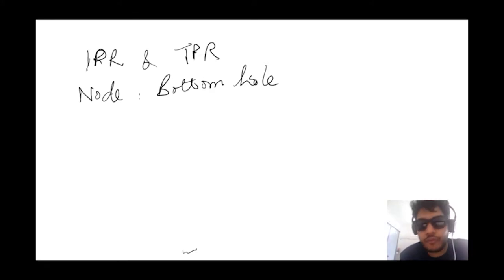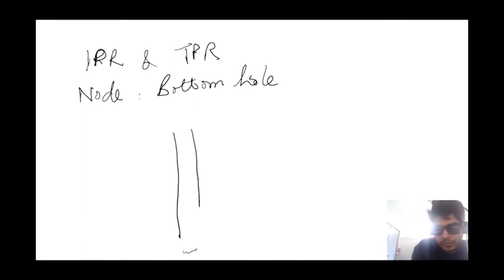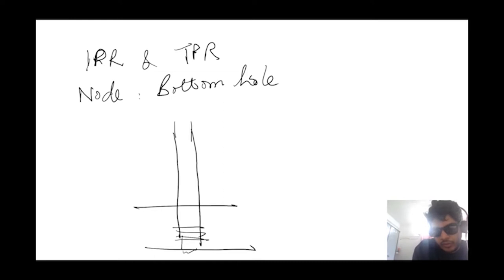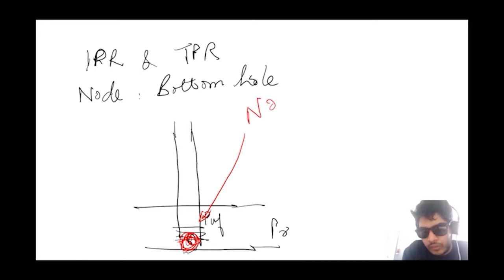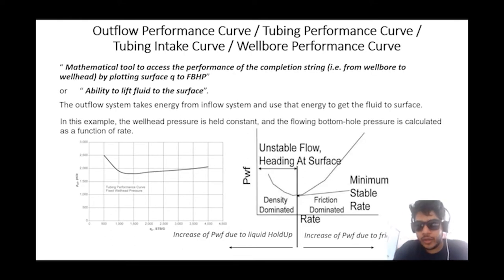Now that's it for the discussion of IPR. The next topic we will be discussing is TPR, that is Tubing Performance Relationship. Whenever we are talking about IPR and TPR, we have to note that the node — the point where we are evaluating — is at the bottom hole. This point is taken as the node whenever we discuss IPR and TPR.